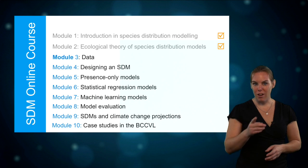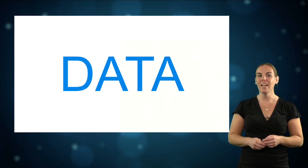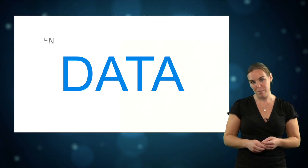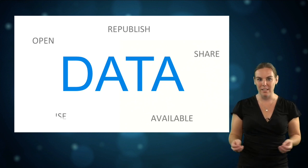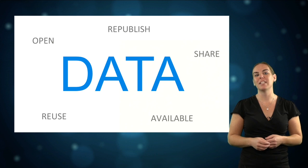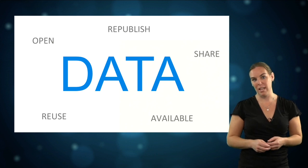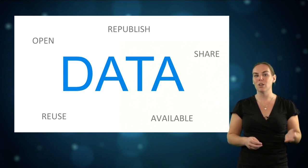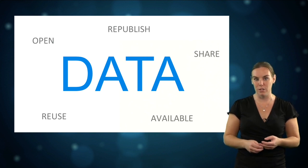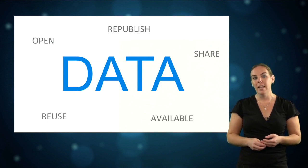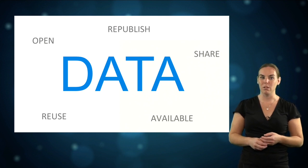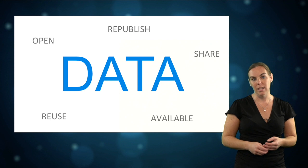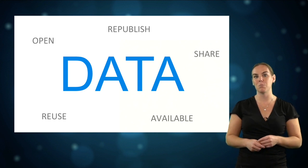Where do you start? Right, with data. With the increasing development of information technology, the amount of data in the world has been exploding. On top of that, we have seen a large movement towards open data, which is the idea that some data should be freely available to everyone to use and republish. That means there is a lot of computing infrastructure and data available, which makes it easier to build and run models such as species distribution models.